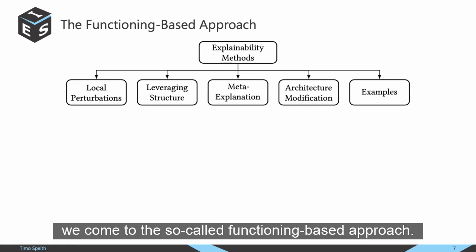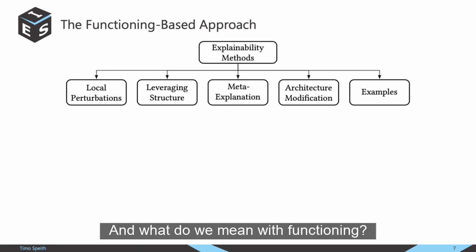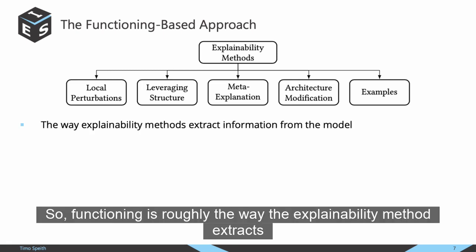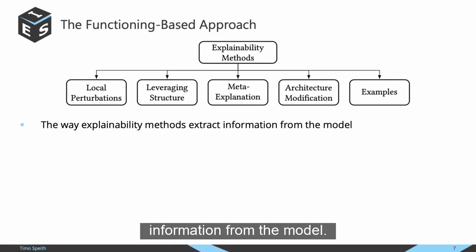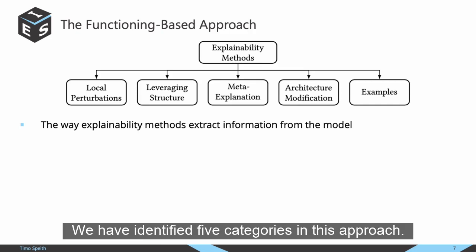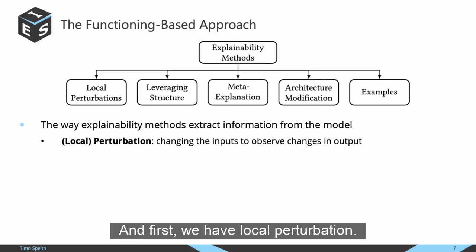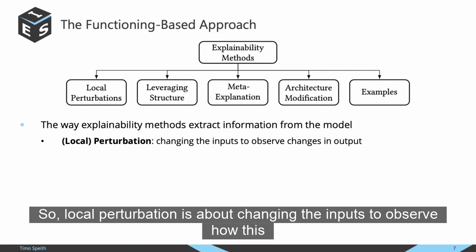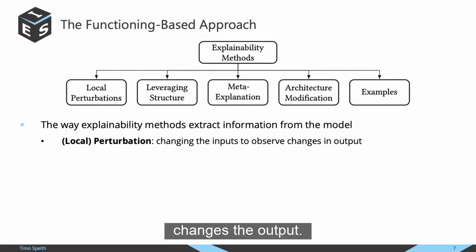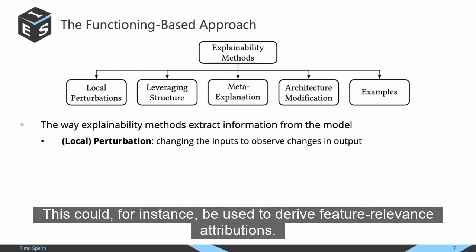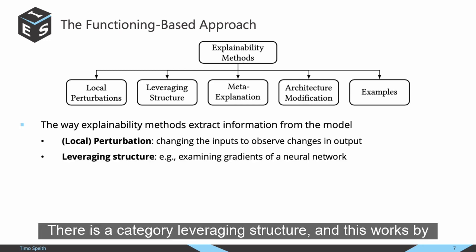First, we come to the functioning-based approach. Functioning is roughly the way the explainability method extracts information from the model. We identified five categories in this approach. First, local perturbation: changing the inputs to observe how this changes the output, which could be used to derive feature relevance attributions. Second, leveraging structure, which works by exploiting properties of the model — for instance, by examining gradients in neural networks.